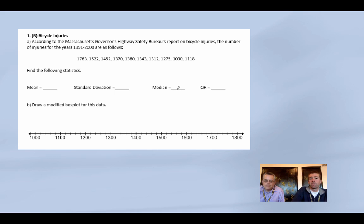We gave our list, so we entered it into one variable stats, list one. And Mr. Miller, we found our following statistics. So what was our mean? The mean was 1,356.5. The standard deviation was 204. The median is 1,356.5, and the IQR is 177.